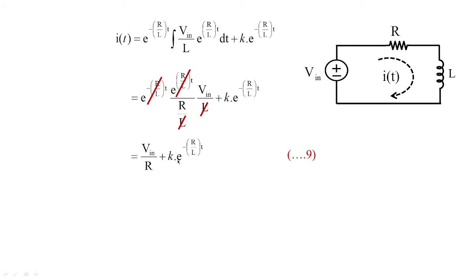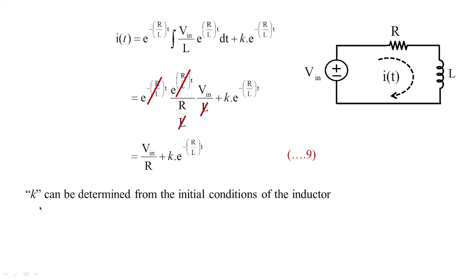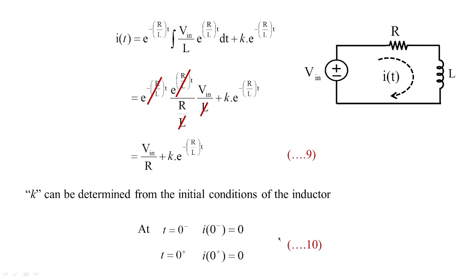The unknown parameter is the arbitrary constant k, which is obtained from initial conditions. At t = 0⁻, when the switch was open, the current is zero: i(0⁻) = 0 A. Similarly, immediately after switching, i(0⁺) = 0 A as well. This is equation 10.